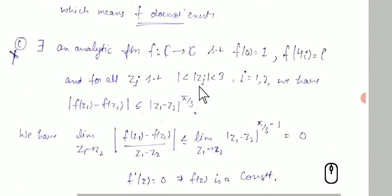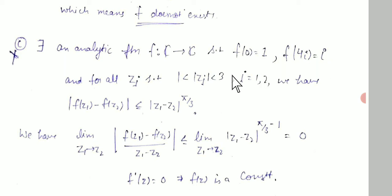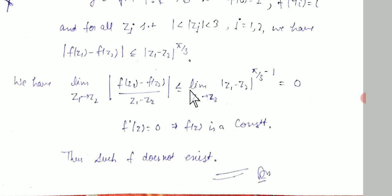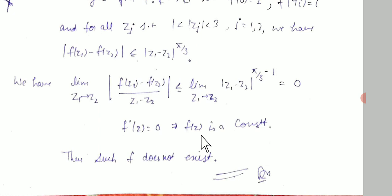Statement C: does there exist an analytic function f: ℂ → ℂ with f(1) = 1, f(4i) = i, and |f(z₁) − f(z₂)| ≤ |z₁ − z₂|^(π/3) for all z in [1,3]? Taking the derivative form and dividing by |z₁ − z₂|, then taking the limit gives |f'(z)| = 0, so f must be constant — contradicting the given values. Hence no such function exists. Thank you, please like, share, and subscribe.